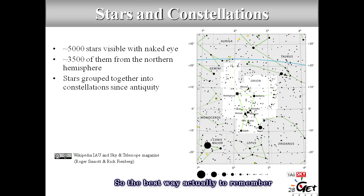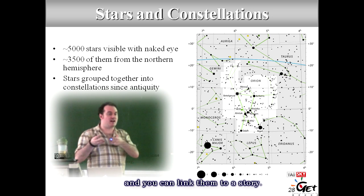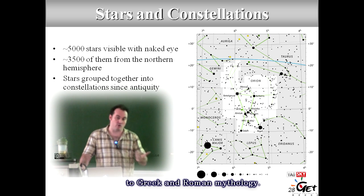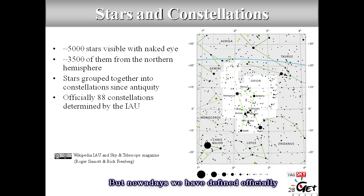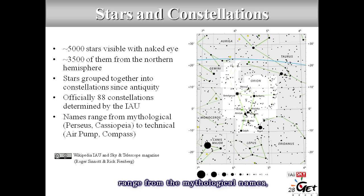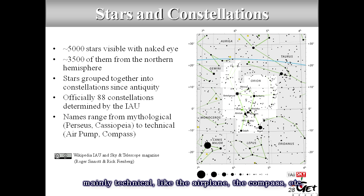The best way to remember those stars is to group them into constellations. You look for geometric forms in the sky on the celestial sphere, group stars together, and link them into a story. The main constellations in the Northern Hemisphere are related to Greek and Roman mythology. Nowadays we have officially defined 88 constellations as determined by the International Astronomical Union — a very well-defined catalog that everyone uses. The names range from mythological names in the Northern Hemisphere, like Perseus, Cassiopeia, or Orion, to technical names in the Southern Hemisphere like the airplane or the compass.